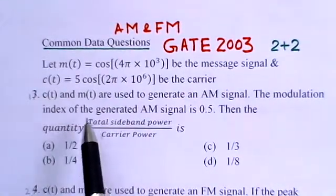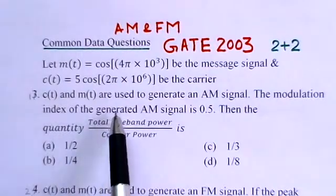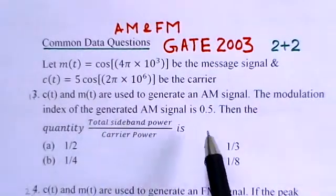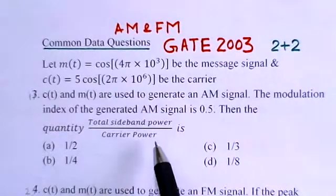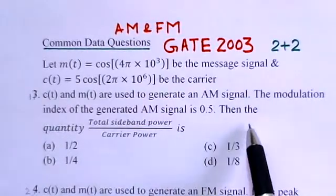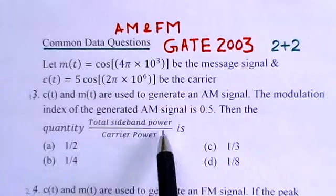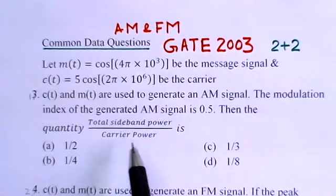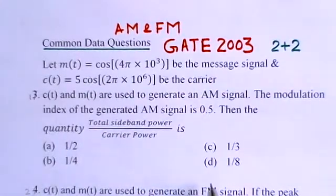In the first part, c(t) and m(t) are used to generate an AM signal. The modulation index of the generated AM signal is 0.5. Then the quantity — total sideband power to carrier power — is to be found. There are four options given.